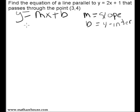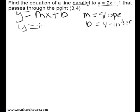So, what do we know about this new line? We know it's parallel to the line in the question. If you remember, parallel lines have the same slope. So we know that m is 2 — we know that this new line has a slope of 2. We don't yet know the y-intercept of our new line.